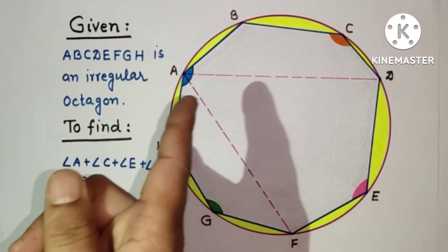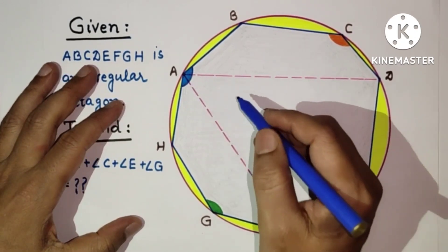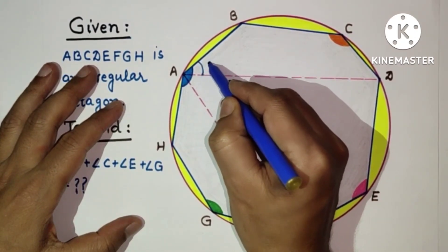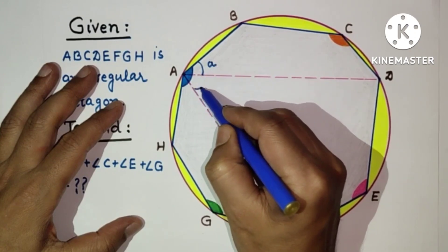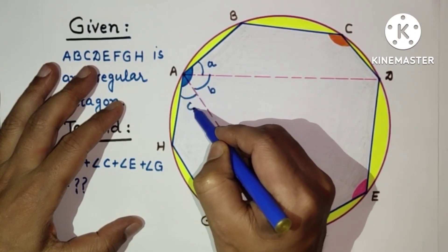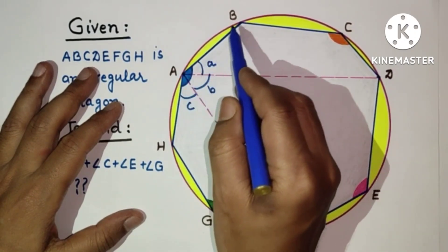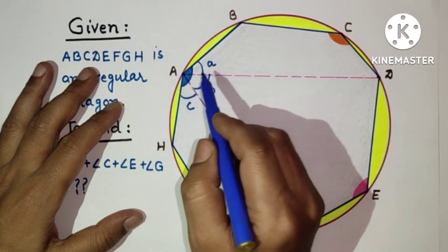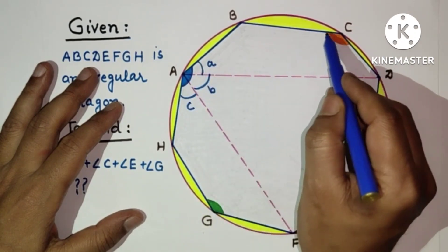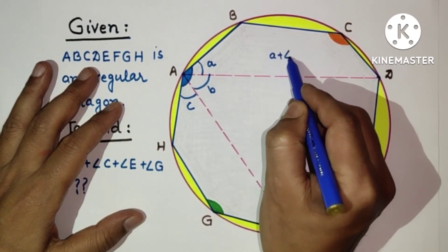Let this angle be a, this angle be b, and this angle be c for this quadrilateral. For cyclic quadrilateral ABCD, this a and this c angle: angle a plus angle c equals 180 degrees.